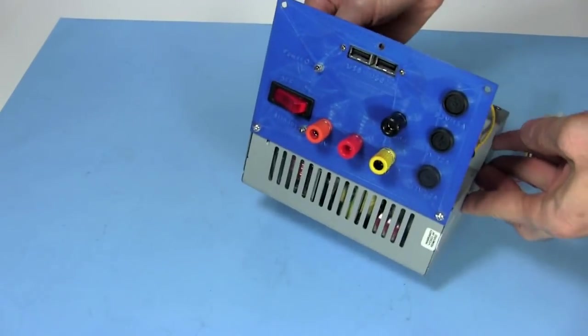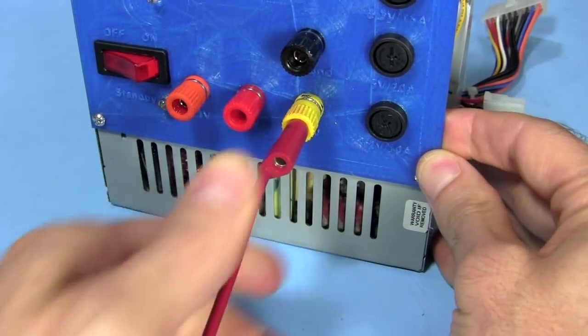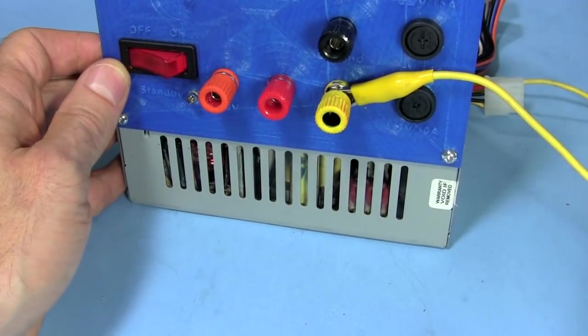To use it someone would plug a banana plug connector into the binding post or connect an alligator clip or a ring terminal.